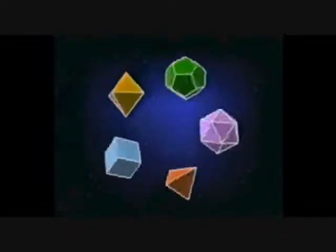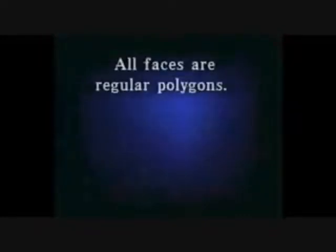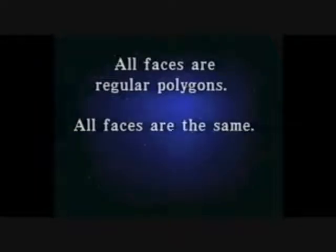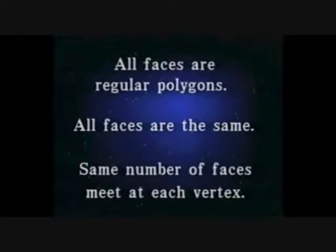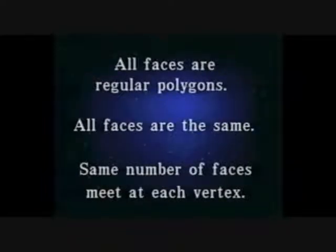Platonic solids are characterized by three properties. All faces are regular polygons. All faces are exactly the same, or congruent. And all corners are exactly the same — that is, the same number of faces meet at each vertex in exactly the same way.